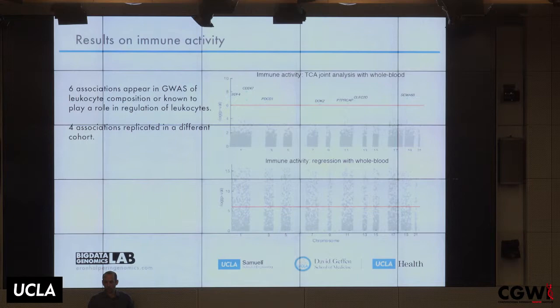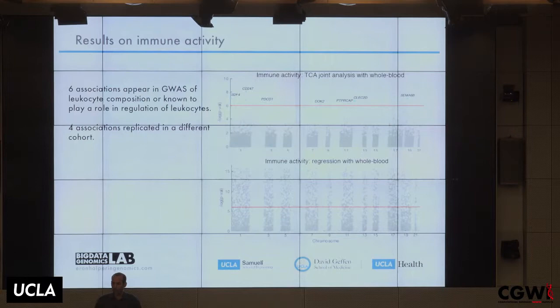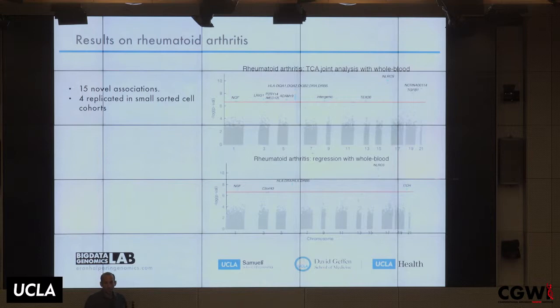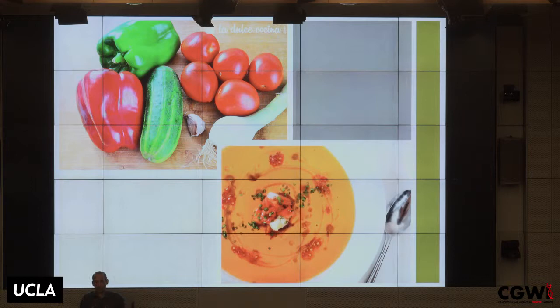Briefly, we ran TCA on a couple of datasets. One looked at the immune system, using cell count itself as the phenotype, and found a number of new associations between immune activity and specific cell-type methylation. We also ran it on rheumatoid arthritis — a relatively common disease — and found 15 novel associations, which we replicated in sorted cells. For some cell types, we have access to sorted cells and validated results there.